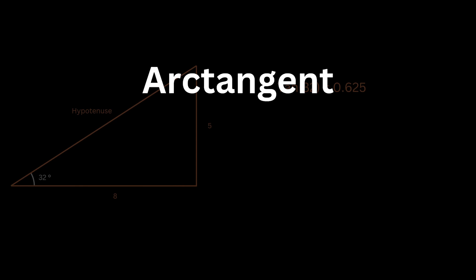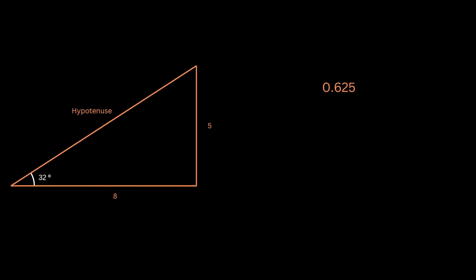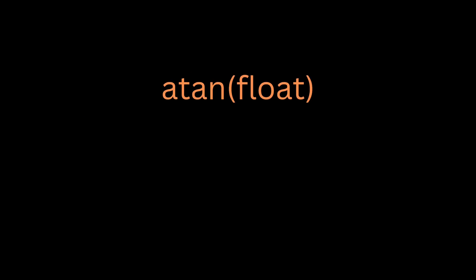Arctangent is just the inverse of the tangent. Meaning if I were to take this 0.625 and feed it into the arctangent function, I will get 32 as output - basically I will get the angle. Most programming languages have this function as atan, which will take a single input which will be the ratio of opposite side divided by adjacent side, and give the results back.